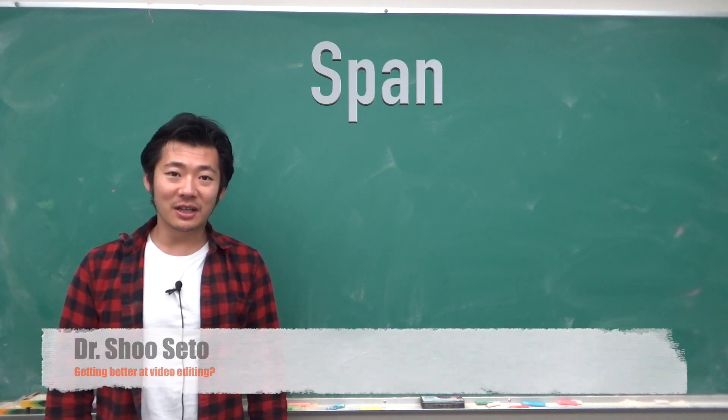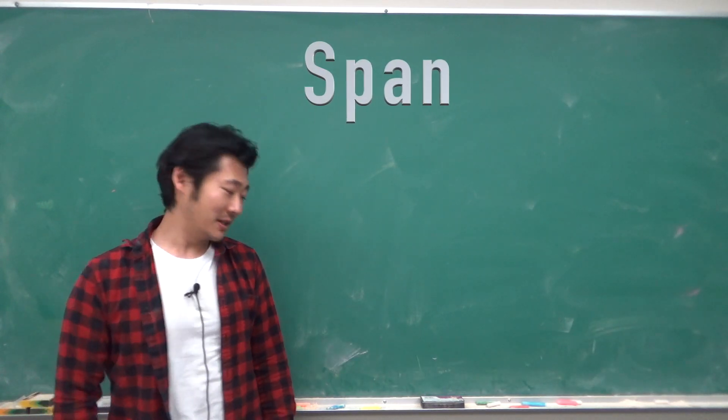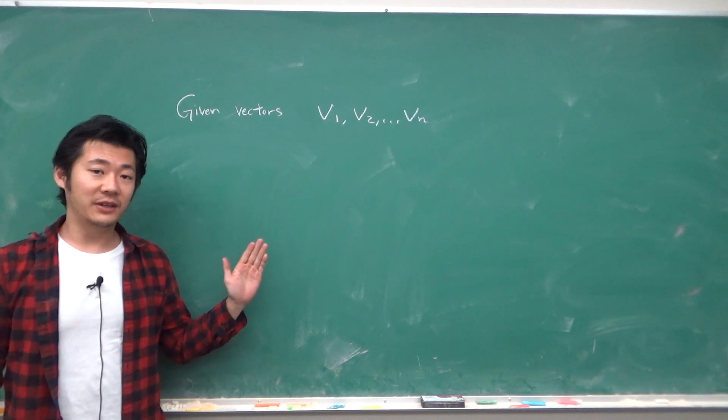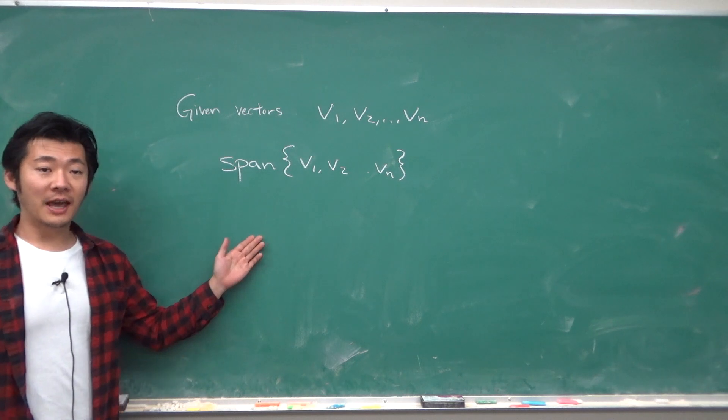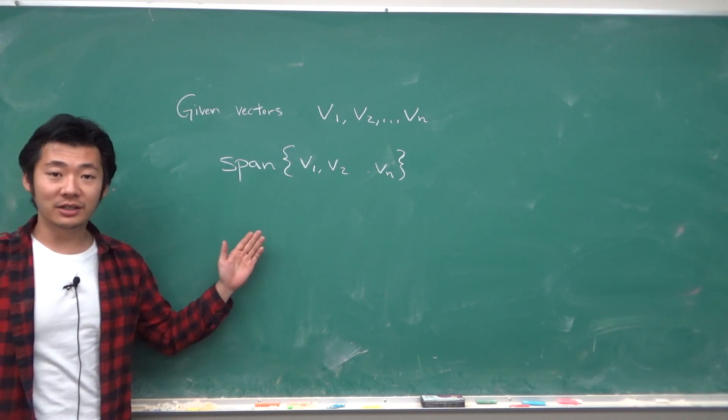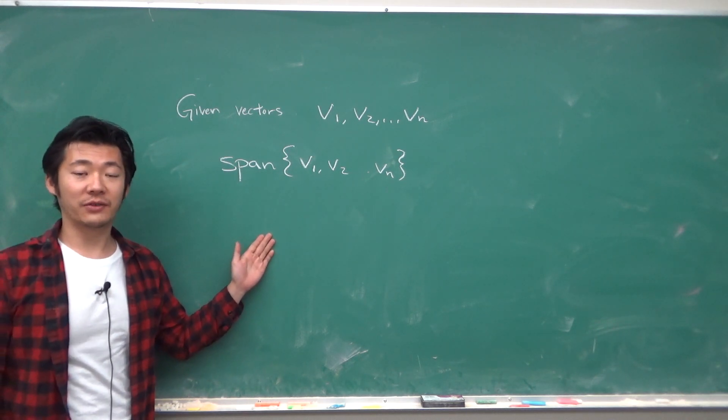Hello everyone, in this video I'll talk about what a span of a set of vectors is. Given a set of vectors v1 to vn, a span of the vectors v1 through vn is the set of all linear combinations of the vectors v1 to vn.